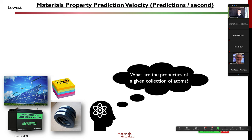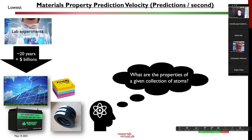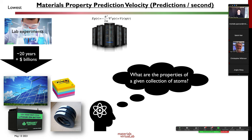I introduce the concept of what I call the materials property prediction velocity — the number of property predictions you can make per second. Traditionally, the only way to get material properties was through lab experiments, which are painstaking and slow. Statistics show it takes about 20 years and billions of dollars to bring a material from discovery to commercialization. With computation, we can produce predictions at a much faster velocity.